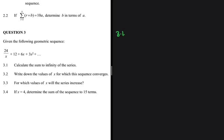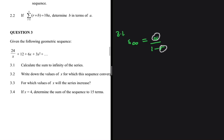Calculate the sum to infinity of the series. We are given a geometric series and the sum to infinity is given by S∞ = a divided by (1 minus r), where a is the first term and r is the common ratio. The first term a is equal to 24 divided by x.